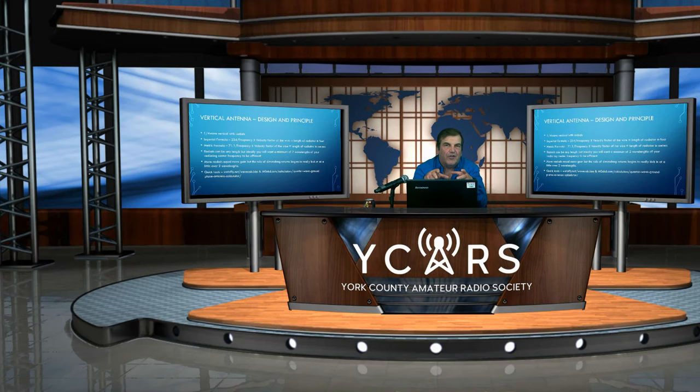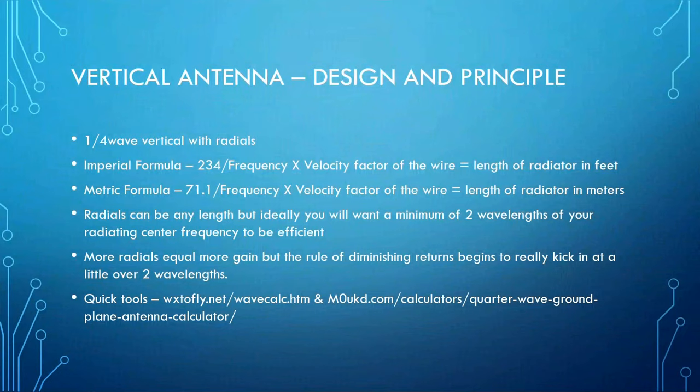Once you get past 16 radials, the gain or benefit you get is not worth the extra effort. Commercial radio stations running 360 radials at every degree of circumference will squeeze every bit of power out, because they're paying for all that power. For quick calculations, there are online tools at the bottom of the slide that will do the formula division for you instead of doing the math on scratch paper.